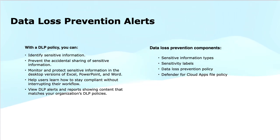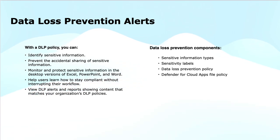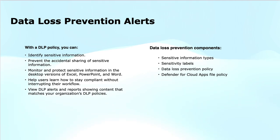The second component is sensitivity labels. Sensitivity labels are used to classify data based on its sensitivity levels, like confidential, internal, or public information. They help apply security settings like encryption, access control, and DLP policies to documents and emails. Labels are manually applied by users or automatically by policy, helping ensure that sensitive data is treated appropriately based on its classification.